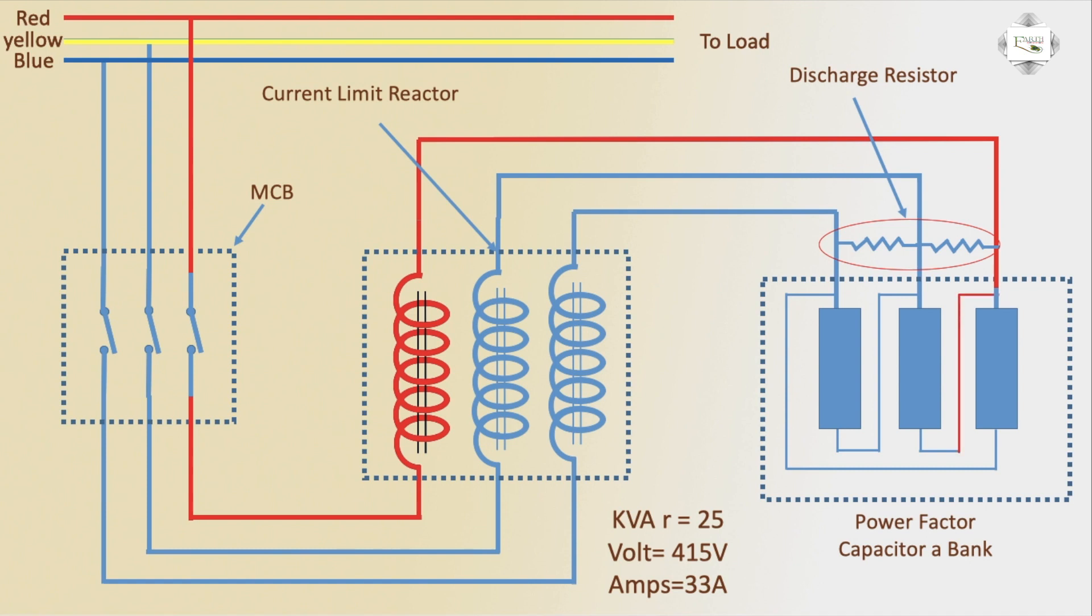Capacitor connection. First capacitor or second capacitor connection, first phase. Second phase yellow connection MCB to current limit reactor to capacitor connection.